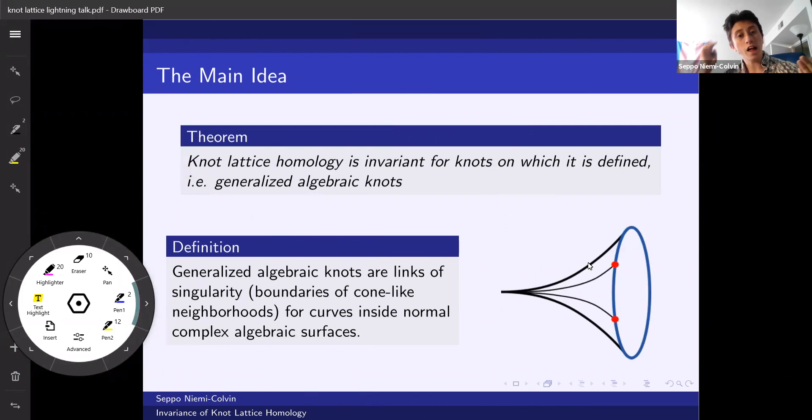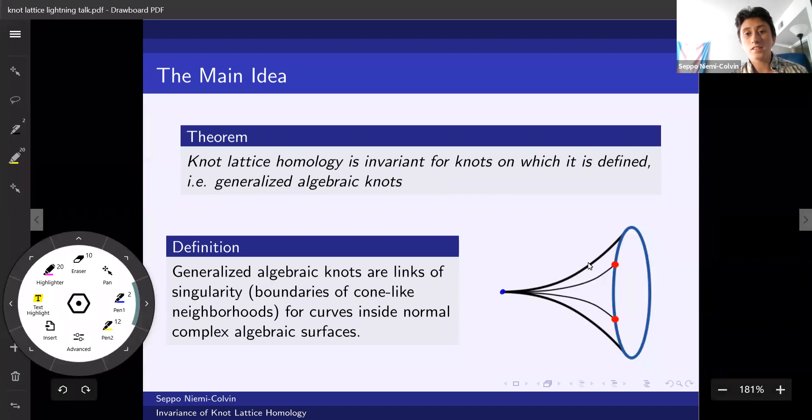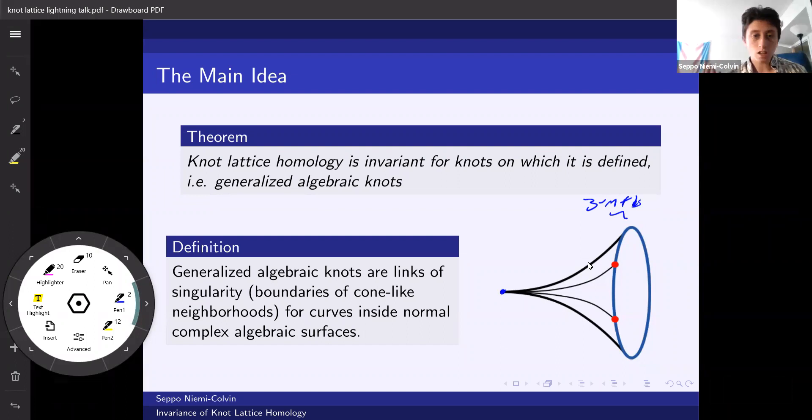To get generalized algebraic knots, we then allow the normal complex algebraic surfaces to be more complicated, and so the cone-like neighborhood over that singular point can be more complicated, and we can get three manifolds other than S3. However, we still have this complex surface with a singularity and a curve that's potentially more singular, and that picks out the knot in question, the generalized algebraic knot.